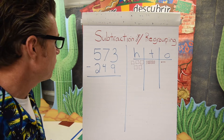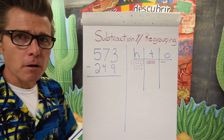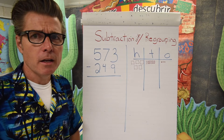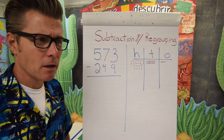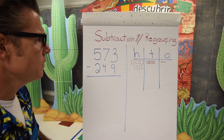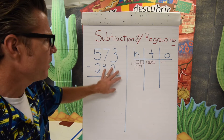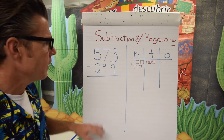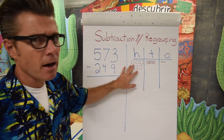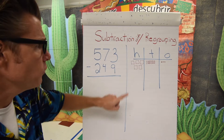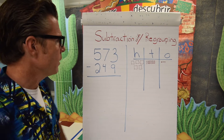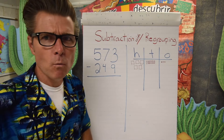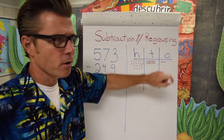We have a subtraction problem here. We have 573, and from that 573 we will be taking away 249. I've broken out each place value here to figure out what we currently have. With the five in the hundreds place, we have five hundreds represented with these little squares. Our tens place is represented by seven tens, and the ones place has three ones.